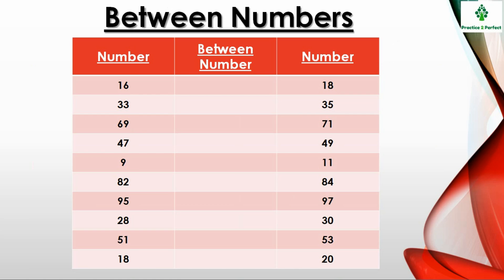Between numbers. Two numbers are given and the number that comes between them is missing here. It can be solved as what comes after 16 or what comes before 18. This was for the first example.